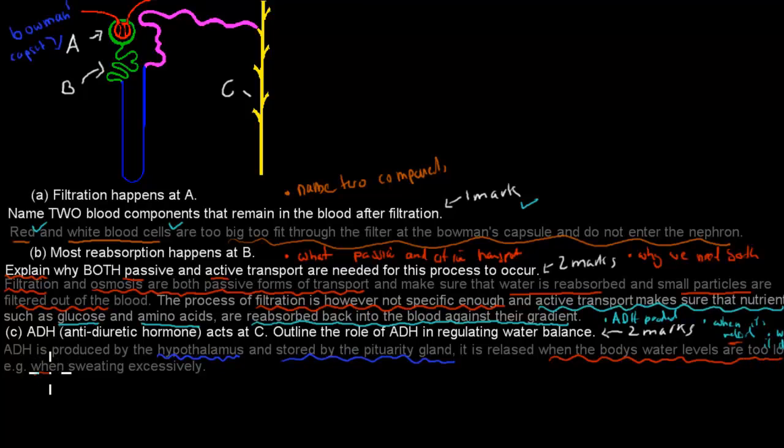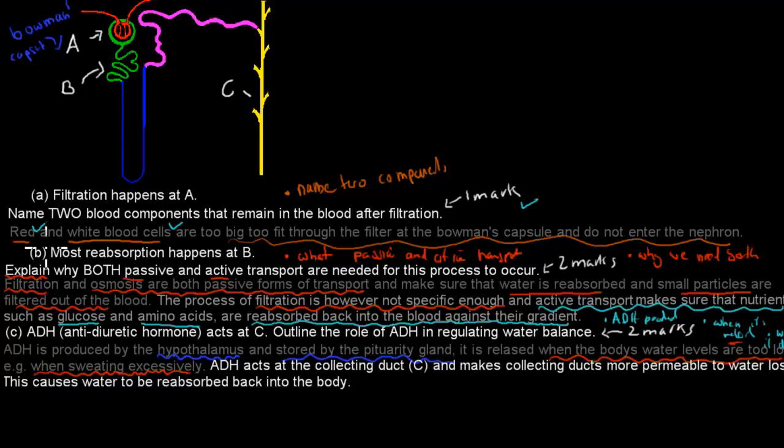For example, this is the example when sweating excessively. When we sweat a lot, we lose a lot of water. Then we still have to mention other things. We have to mention what it does. ADH acts on the collecting duct, and I just wrote C in commas to show them that collecting duct is actually C. And it makes the collecting ducts more permeable to water. So this means that the actual water can flow from the collecting ducts back into the body.